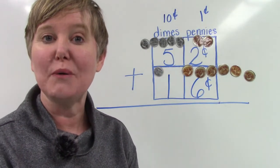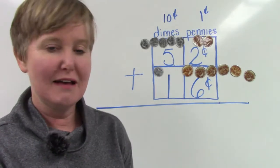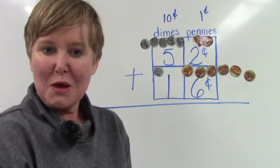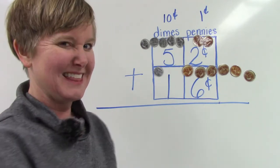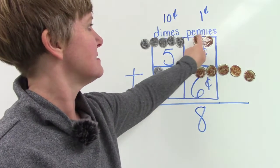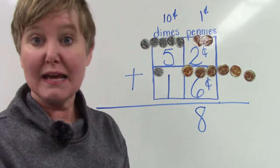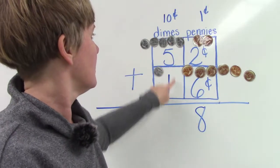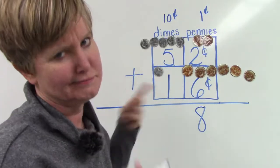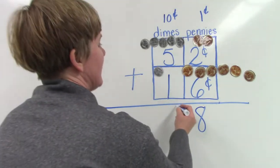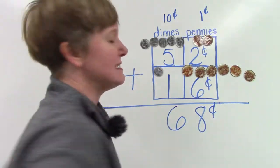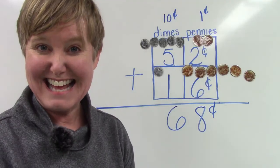Well, we're going to start off by adding our ones place together. That's the pennies. We have two plus six. What would two plus six be? Did you say eight? We have six, seven, eight. And now we're going to add our tens place together. The dimes column. We have five plus one. Well, that's easy. That is six. 52 cents plus 16 cents is 68 cents.